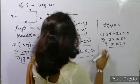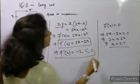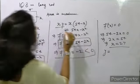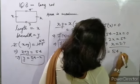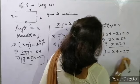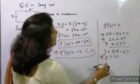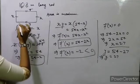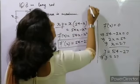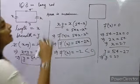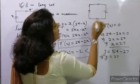So x = 27. And y = 54 - x = 54 - 27 = 27. So both x and y are equal to 27. This means the 108m rod is converted into a square, because all sides are equal.